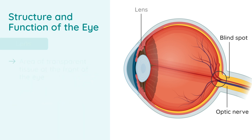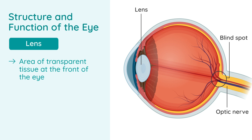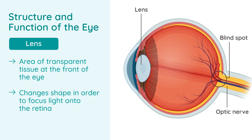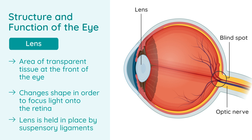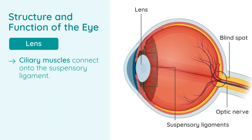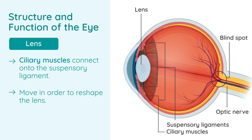The lens is an area of transparent tissue toward the front of the eye. It can change shape in order to focus light onto the retina. The lens is held in place by suspensory ligaments. The ciliary muscles connect onto the suspensory ligaments and they move in order to reshape the lens, and by reshaping the lens, we can focus light onto the retina.